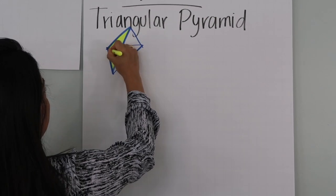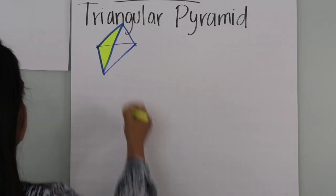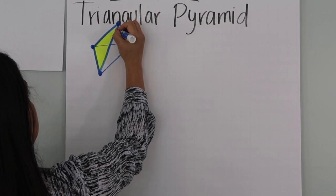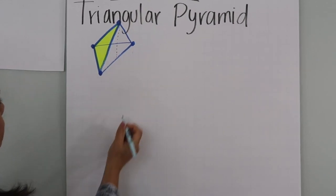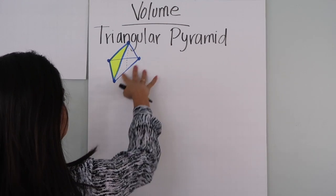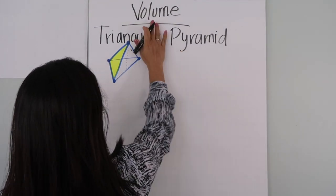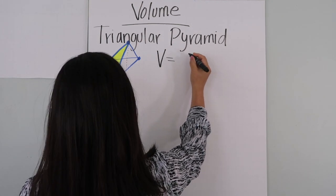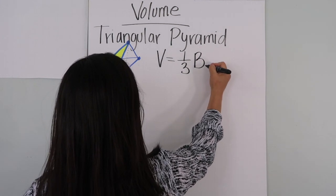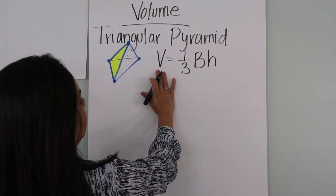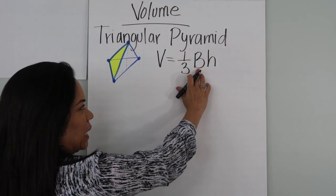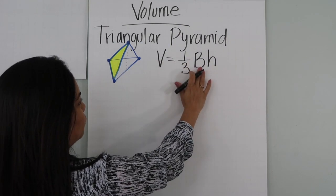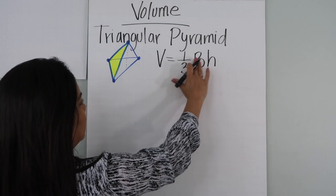I'm going to highlight one of the sides so you can see it. For this specific example, we're going to start with the formula to find the volume of the triangular pyramid, which is V equals one-third times capital B times capital H. Capital B represents the area of the base, and the base is a triangle. So we find the area of the triangle, multiply times the height, then divide by 3.